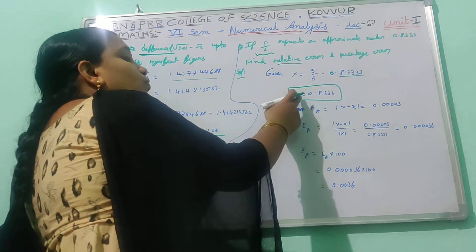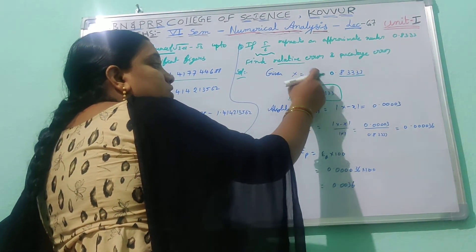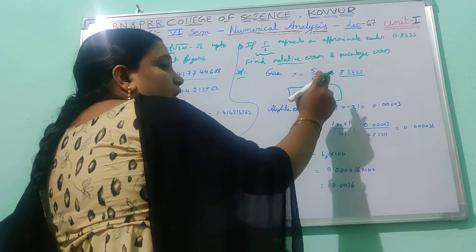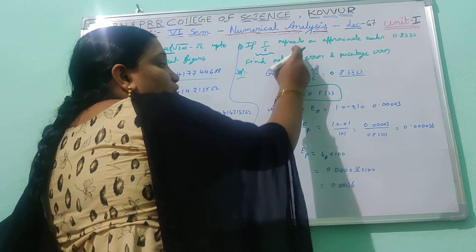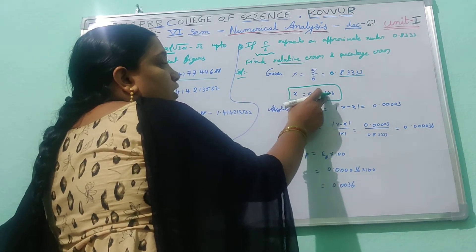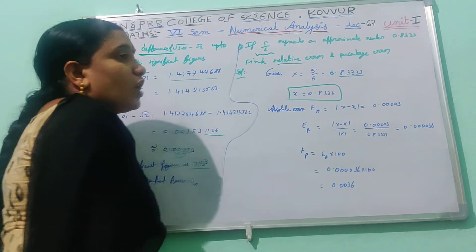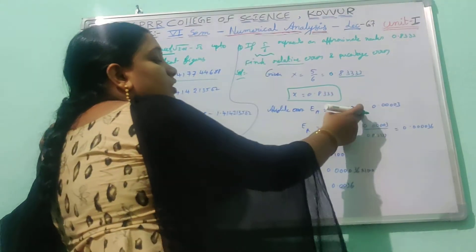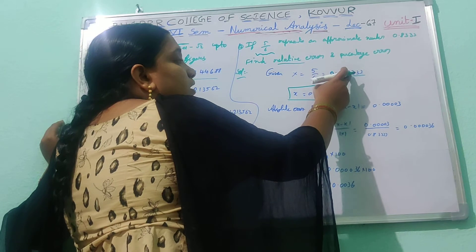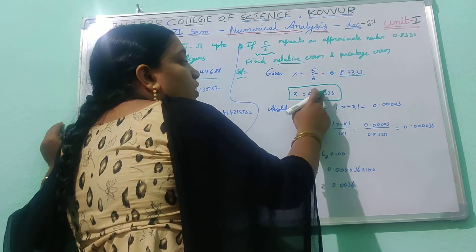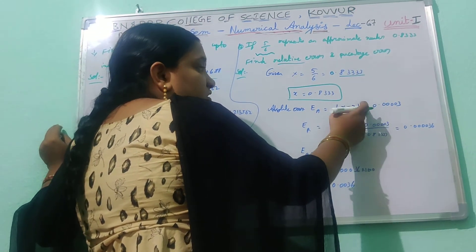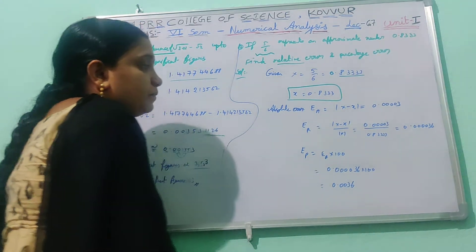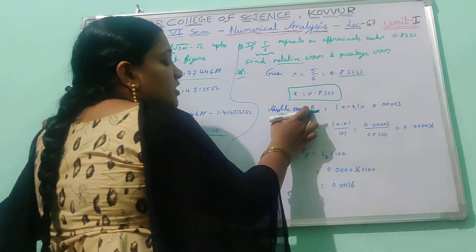The exact value of 5/6 in decimal is 0.83333. The approximation value given in the problem is x̄ = 0.8333. So absolute error = |exact value − approximation value| = |0.83333 − 0.8333|. Subtracting gives the modulus, which equals 0.000003. So absolute error is found.